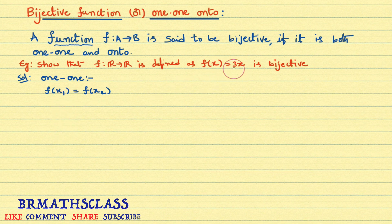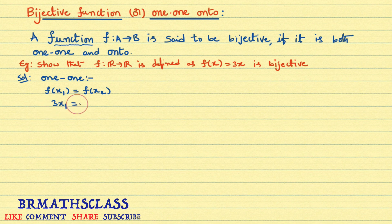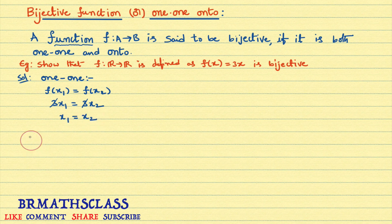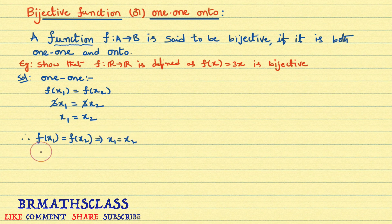What is f(x)? f(x) is 3x. So f(x1) is 3x1, equal to f(x2), which is 3x2. You can observe that the 3's will get cancelled. You will get x1 equal to x2. So we are able to prove that if f(x1) equals f(x2), then x1 equals x2. From this, we can say that the given function is a 1-1 function. Therefore, f is 1-1.